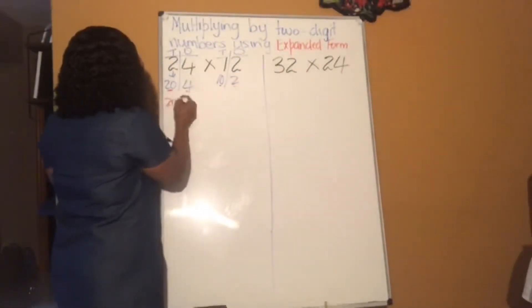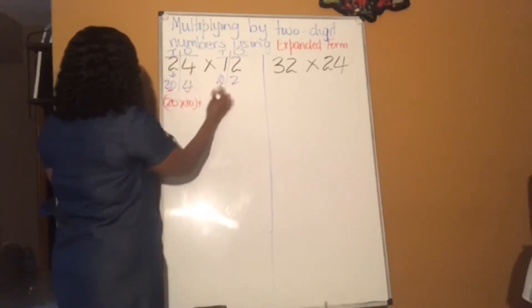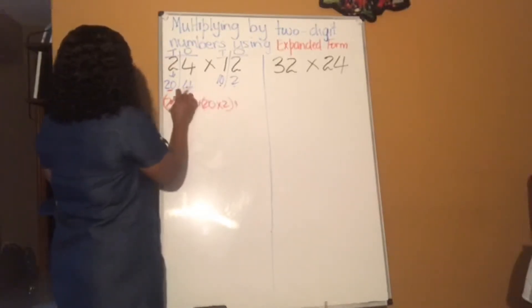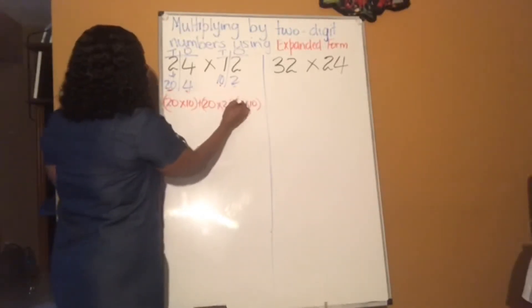So 20 times 10, put those in brackets, plus 20 times 2, brackets, plus 4 times 10, bracket, and 4 times 2.